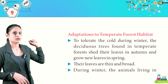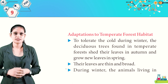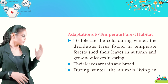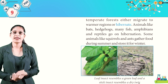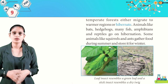Adaptations in temperate forest habitat: deciduous trees shed their leaves in autumn and grow new leaves in spring to tolerate cold during winter. Their leaves are thin and broad. During winter, animals in temperate forests either migrate to warmer regions or hibernate. Bats, hedgehogs, many fish, amphibians, and reptiles go into hibernation. Some animals like squirrels and ants gather food during summer and store it for winter.